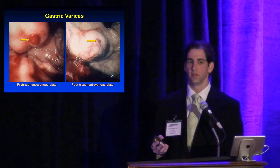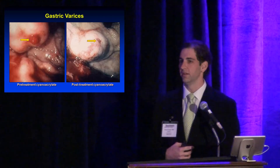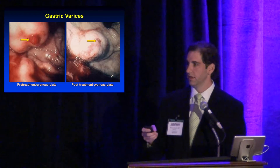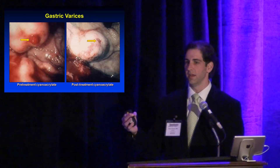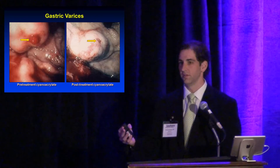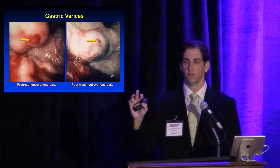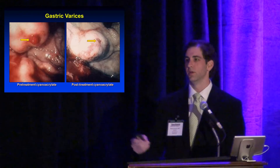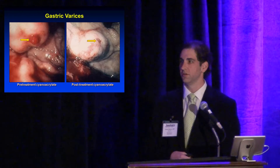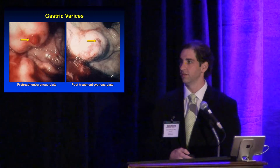Previously, all gastric variceal patients were sent to interventional radiology after balloon tamponade. Now we can inject cyanoacrylate endoscopically into the varices — similar to Histoacryl used elsewhere in the world but not FDA-approved. This allows us to endoscopically occlude gastric varices and prevent all of them from going to TIPS, which carries risks of encephalopathy and other complications.